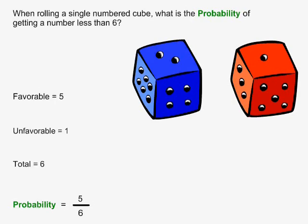When rolling a single numbered cube, what is the probability of getting a number less than 6? There are 5 numbers on the cube that are less than 6: 5, 4, 3, 2, and 1. So the number of favorable cases is 5.